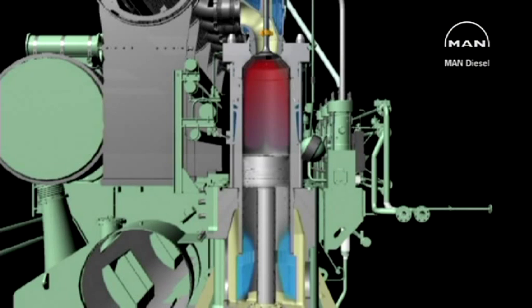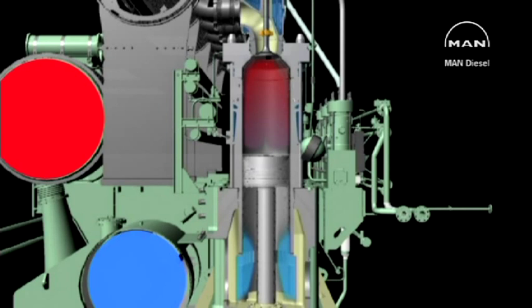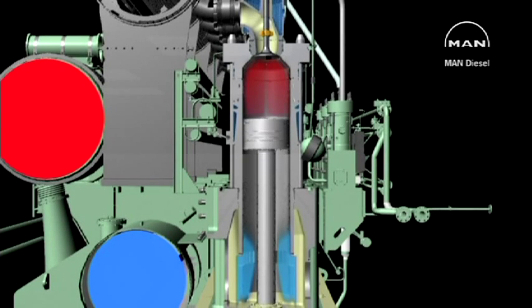Let's look a little closer at the principle on which a two-stroke engine works. Fresh air is supplied by a turbocharger. From the turbocharger compressor, it's conducted through air coolers into a common scavenge air receiver along the engine, and to the scavenge air space around each cylinder.